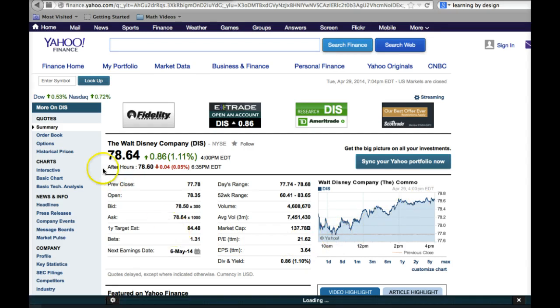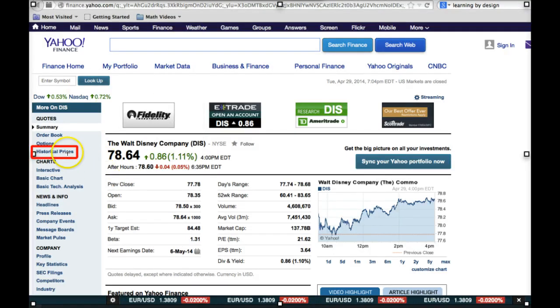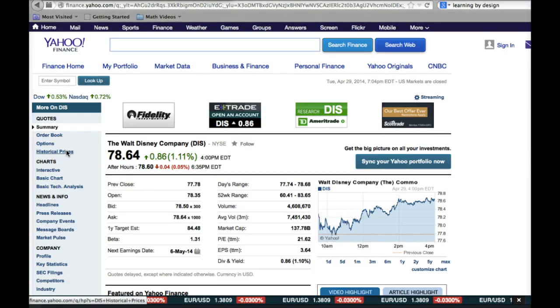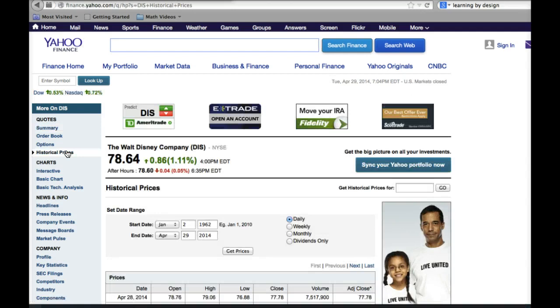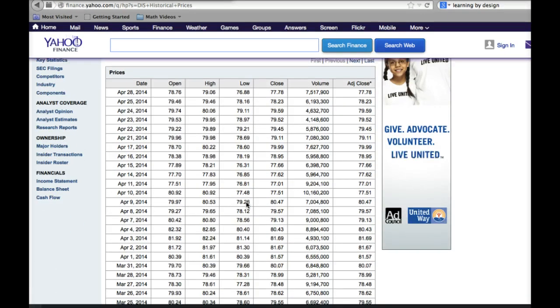But what I want to go to is over here, historical prices. When I click on historical prices, it will direct me to a page that shows all the previous opening, closing highs and lows for the Walt Disney company. And I can scroll down here and I can see the date for each day, the open high, low, close and the volume.